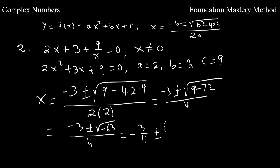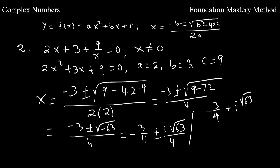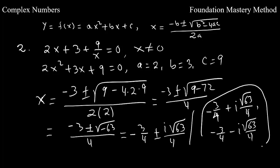We can write this further as −3/4 ± i√63/4. So the two complex solutions are: negative 3/4 plus i√63/4, and negative 3/4 minus i√63/4. These are our complex solutions for this equation.